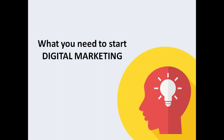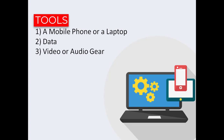What you need to start digital marketing: there are three basic things. The first is a mobile phone or a laptop — you can use either depending on the kind of business you are doing. Not everybody can afford a laptop, but you can make a whole lot of money with just your phone if you know how. You also need data to start up a digital marketing business. Then you need a video or audio gear — a good microphone and a good camera depending on the kind of content you want to create.